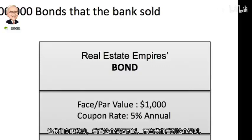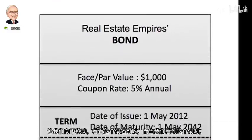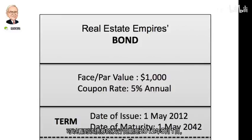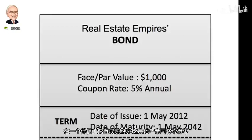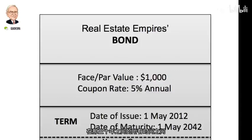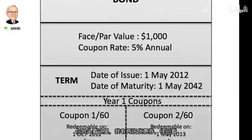Let's look at the term. The date this bond is issued is 1 May 2012, and the date it becomes mature is 30 years later on 1 May 2042. When Jesse buys that bond on 1 May for a thousand dollars, Real Estate Empires will have to pay Jesse his thousand dollars back on 1 May 2042. In between those 30 years, Jesse is collecting interest on his thousand dollar investment.